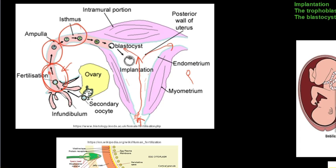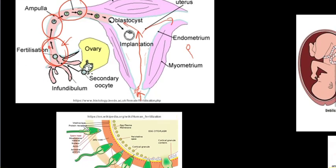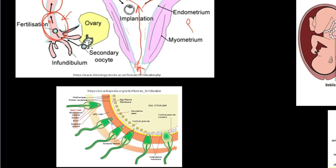Many sperm surround the egg cell but only one will succeed. The acrosome of the sperm secretes lytic enzymes that digest the outer layer of the follicle cells of the egg. The sperm's acrosome releases those lytic enzymes to break through, releasing its genetic material — the nucleus — into the egg cell. At that stage, the tail with the mitochondria remains on the outside. This is why mitochondrial DNA (mtDNA) is only carried on from women.